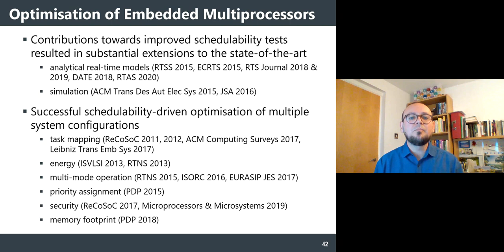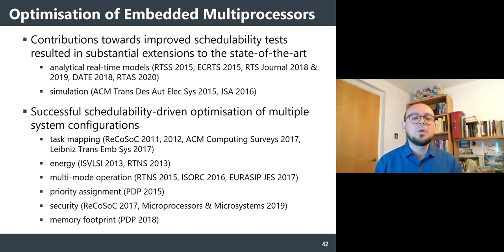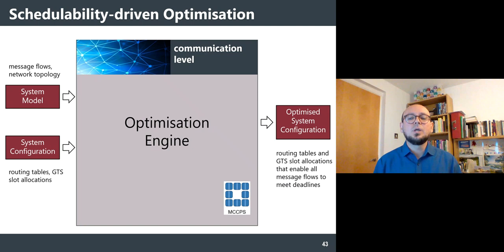When considering both schedulability and energy dissipation — shown by the purple lines — we still find a fully schedulable solution, but it takes 39 generations compared to 11. However, the purple line at the top of the figure shows significantly reduced energy dissipation. Using multiple objectives for guidance allows optimizing multiple goals simultaneously, though naturally taking longer. We have published contributions on schedulability test creation and simulation acceleration, and successfully applied this approach to task mapping, energy dissipation, multi-mode operations, priority level minimization, security, and memory footprint.